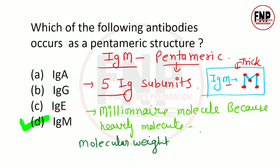IgM ka molecular weight 90,000 to 1,90,000 hota hai - yeh bhi important hai, note kar lein. Yeh saari jaankari IgM ke baare mein important hai. Aap chahein toh note kar lein ya revision ke liye screenshot le lein.